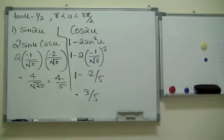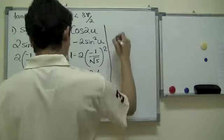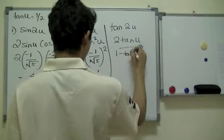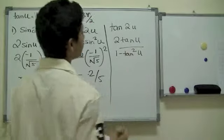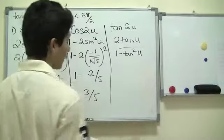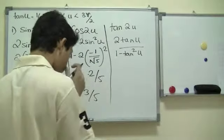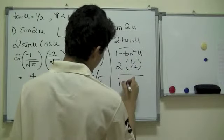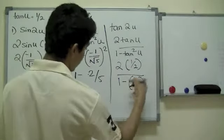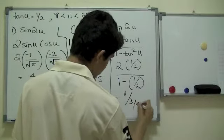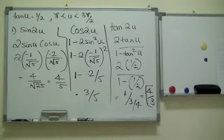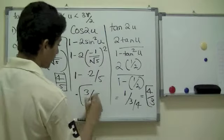Now all you need to do is come up with the final solution. Tangent of 2u equals 2 tangent u over 1 minus tangent squared u. Plugging in using the diagram — tangent is opposite over adjacent, which is 1 over negative 2 — we get 2 times 1 over negative 2, over 1 minus 1 over 4, which gives us 4 over 3. So the answers are: sine of 2u equals 4 over 5, cosine of 2u equals 3 over 5, and tangent of 2u equals 4 over 3.